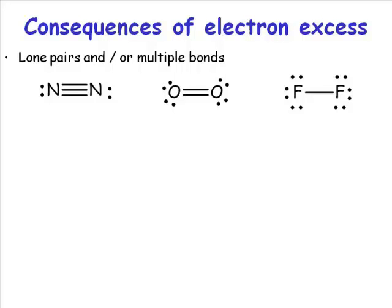So the consequences of electron excess are either lone pairs and/or multiple bonds. You're always going to have lone pairs. Whether or not you get multiple bonds is going to depend on the size of your element.